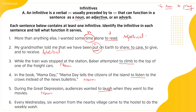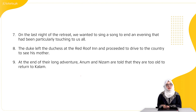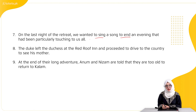Sixth: 'Every Wednesday, six women from the nearby village came to the hostel to do the weekly wash.' Yahan ek action ho raha hai — aane ka. Phir us ke baare mein extra information di ja rahi hai: woh hostel kya karne aati thi? To do the weekly wash. So 'to do the weekly wash' is acting as an adverb — adverb of reason/purpose. Seventh: 'On the last night of the retreat, we wanted to sing a song to end an evening that had been particularly touching to us all.' To end an evening — why did they sing? To end the evening, so this is also adverbial — adverb of purpose.